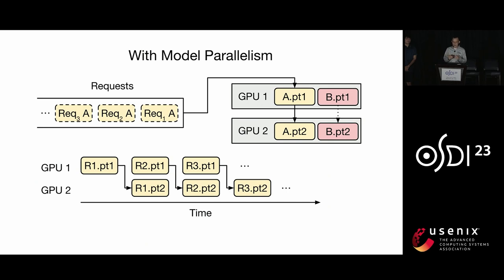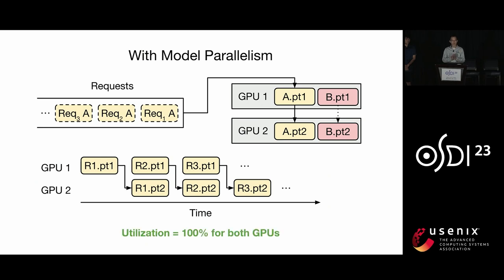In fact, we no longer need to distinguish between model A and model B's requests — we can serve all of them with both GPUs. As long as we have requests coming in, we can achieve 100% utilization for both GPUs. In other words, we can statistically multiplex the two GPUs for the two models.